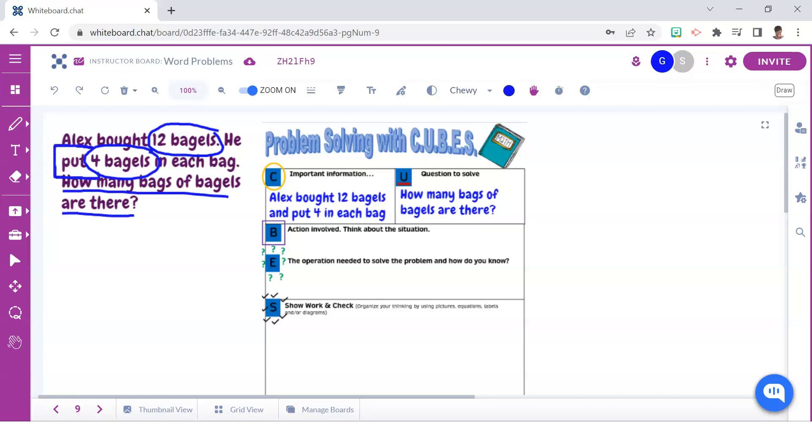Next we must box the action words that describe whether something is being combined or separated. And although put is not one of your traditional math action words, it does describe an action—what Alex did with the bagels. He put four in each bag. And the signal word each lets us know that something is being grouped.